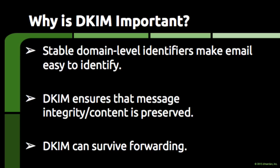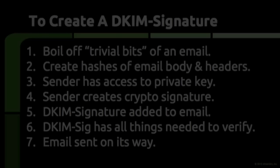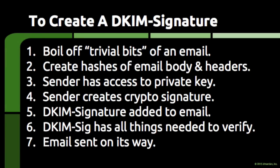DKIM creates a link between a domain and a piece of email through the DKIM signature that gets attached to the piece of email. The DKIM signature includes everything needed to verify that the signature is unique to the piece of email, that the piece of email hasn't been altered, and that the signature was created by an email server related to the domain in question. To create a unique signature that only applies to a specific piece of email, the email server that adds the DKIM signature performs the following steps.